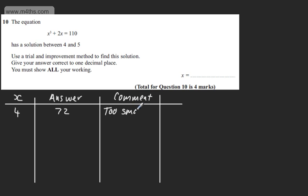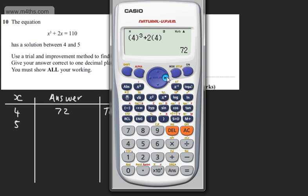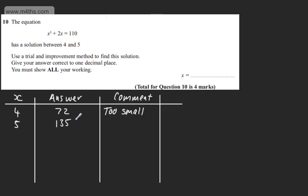The comment is that it's too small. So it's too small and we now go ahead and try 5. 5 is going to be too big. So if we put this in, we're going to end up with 135. So 135.